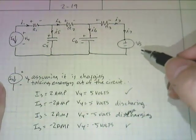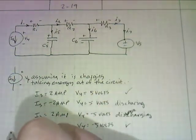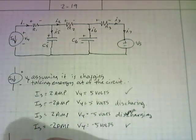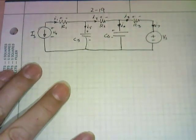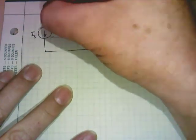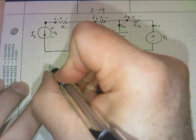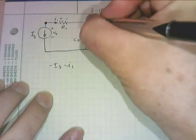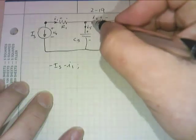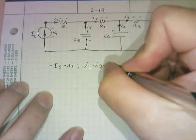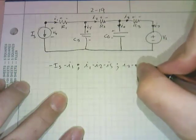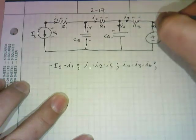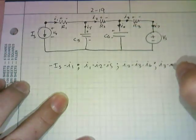The same thing can be said at Vs — because this is drawn as charging, it's taking energy out of the circuit, drawn like a passive device, so again we're assuming it's charging. Let me review Kirchhoff's current law: we put a node at the trivial node and said minus IS minus I1 equals zero; at the next node I1 minus I2 minus I5 equals zero; at the next node I2 minus I3 minus I6 equals zero; and trivial node I3 minus I7 equals zero.